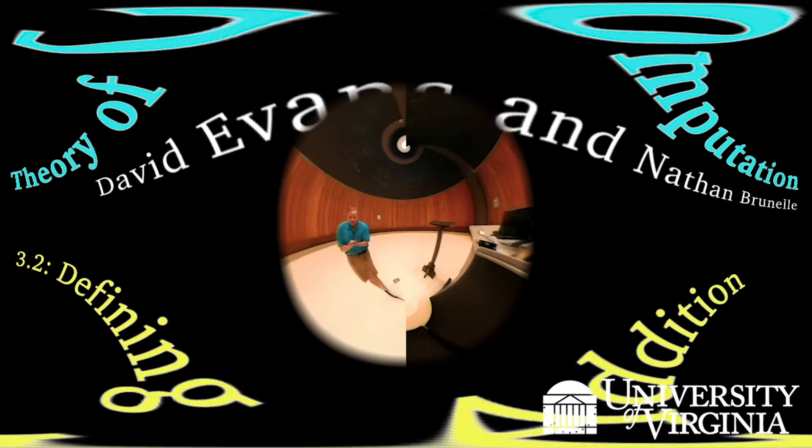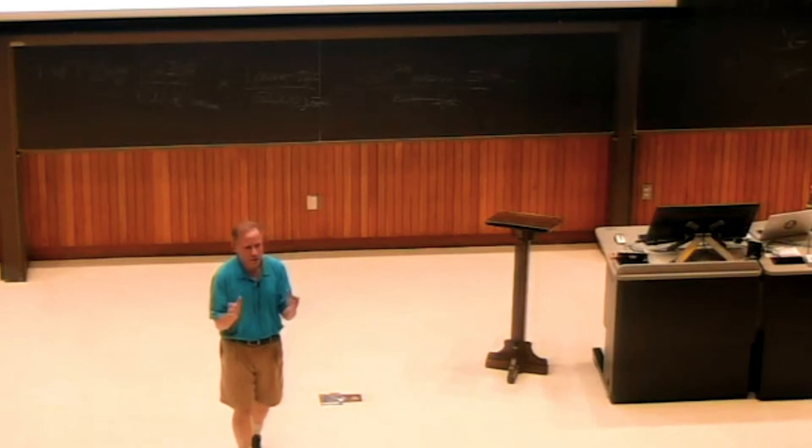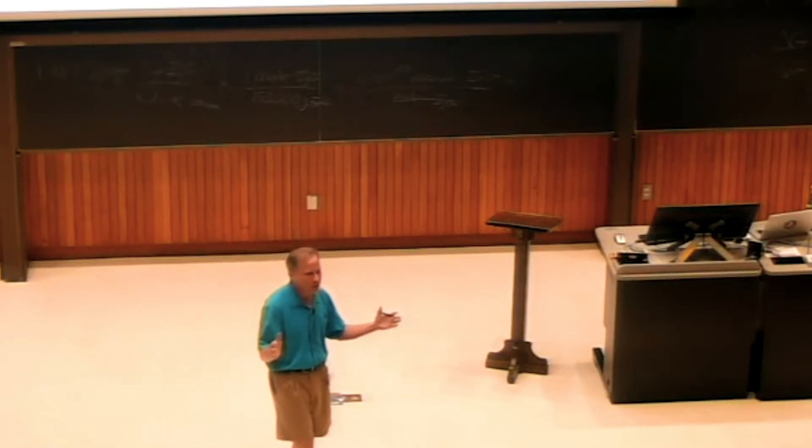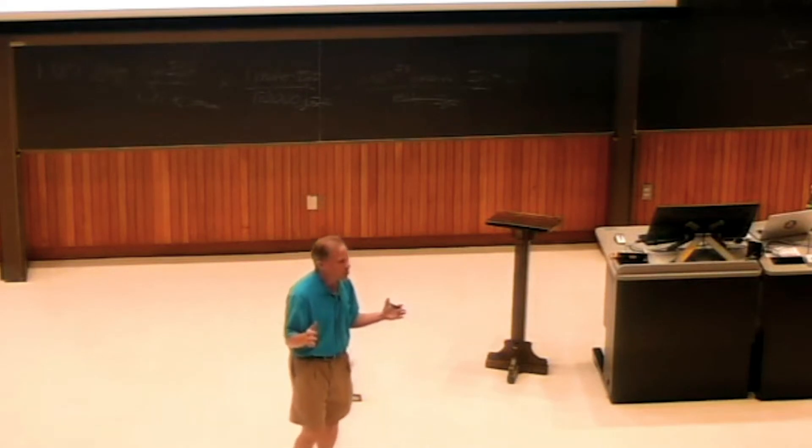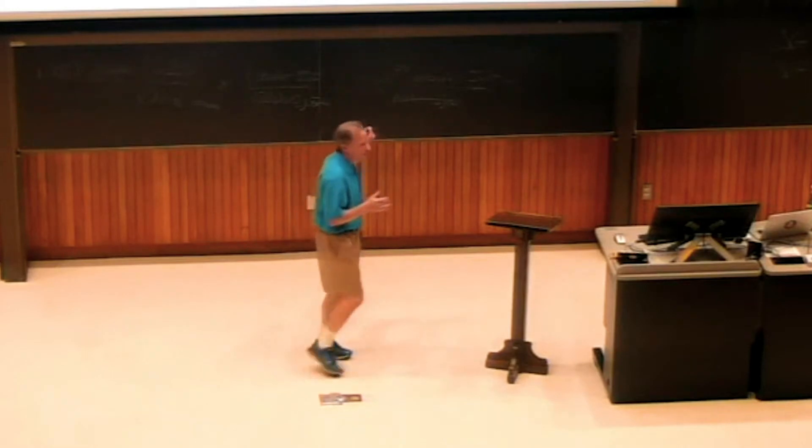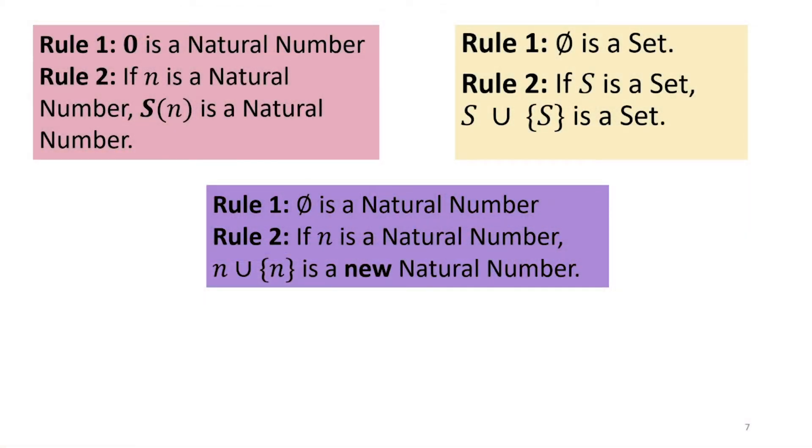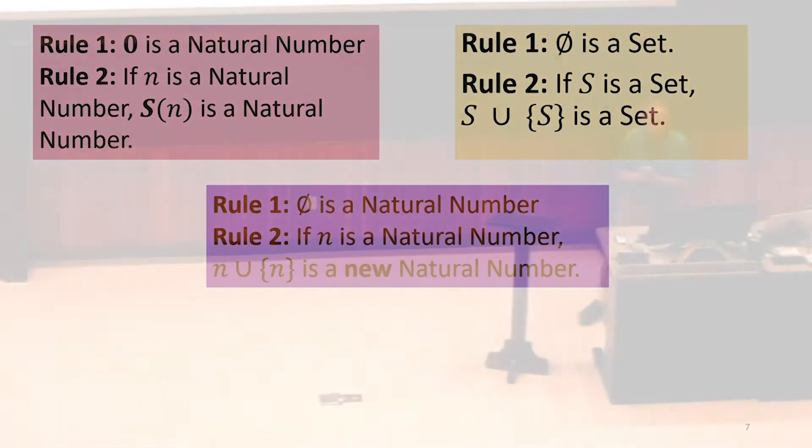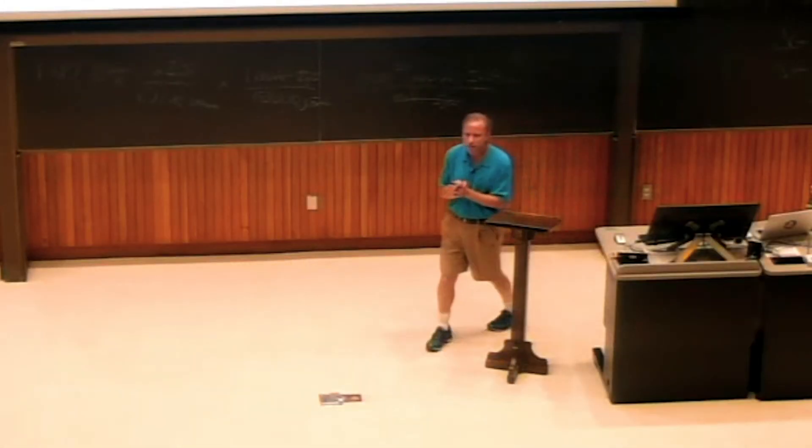One of the questions last class was about, can we do addition? So we define these natural numbers. If they are a good way of representing what we think of as natural numbers, we should be able to do addition on them. We should be able to define something on these objects that we can construct through these strange rules that behaves the way when you are in first grade, or probably many of you younger than that, you learn what addition means. We should be able to define it. So can we define addition to work on these objects that we're constructing?